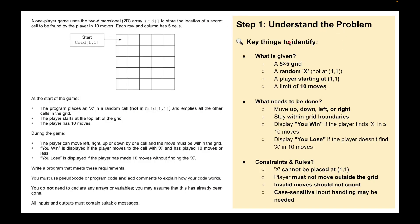We need to understand the problem first of all. So I've read it to you, so what I hope you've gleaned from that is the key things. What is given? We've been given a 5x5 grid. A random X will be placed in the grid, but not at position 1-1. The player starts at position 1-1, grid 1-1. The player has a limit of 10 moves. The player can move up and down, left and right, but must stay within the grid boundaries. It displays 'You Win' if the player finds the X in less than or equal to 10 moves, and displays 'You Lose' if the player doesn't find the X in 10 moves.